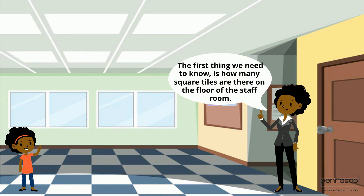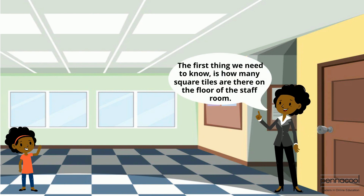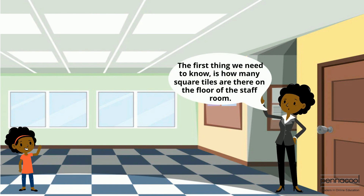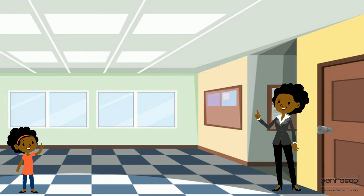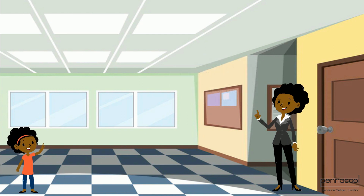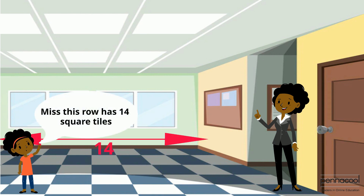The first thing we need to know is how many square tiles are on the floor of the staff room. Janice says, 'Let me count them.' After counting, she reports, 'Miss, this row has 14 square tiles.'